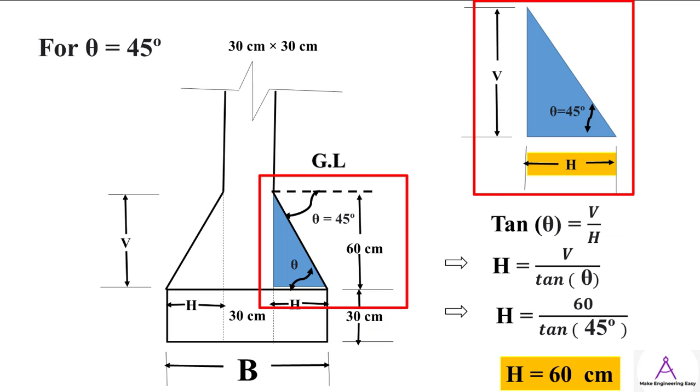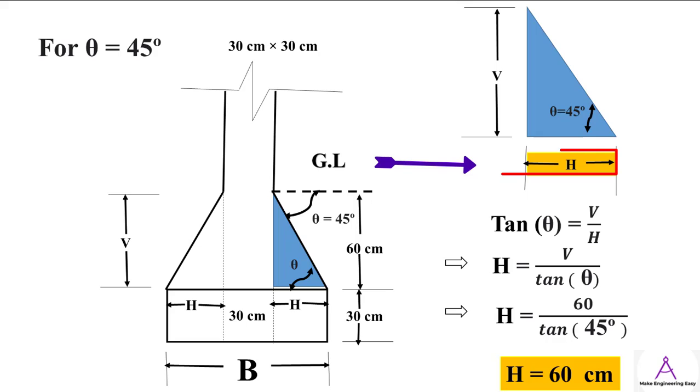Now consider the right angle triangle. The base of the right angle triangle is denoted by H. The perpendicular of the right angle triangle is denoted by V. As we know that tangent theta equals perpendicular divided by base. But we need base of the triangle which is equal to perpendicular divided by tangent theta. By putting the value of perpendicular which is 60 cm and the value of theta equal to 45 degrees, we get 60 divided by tangent of 45 equals 60 cm.